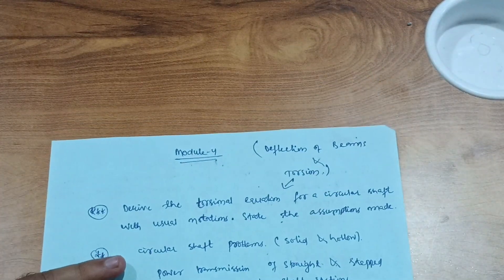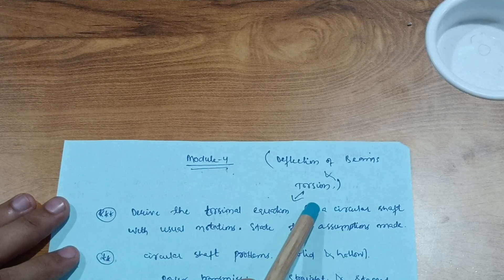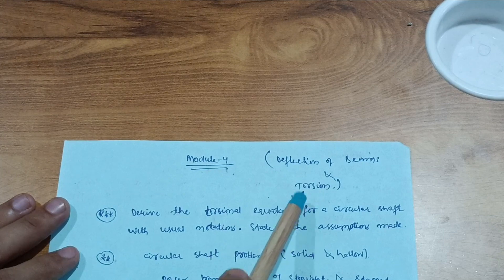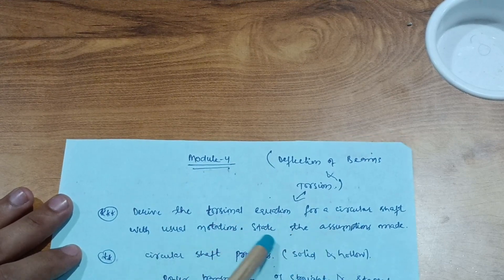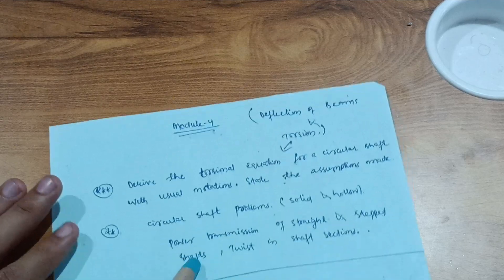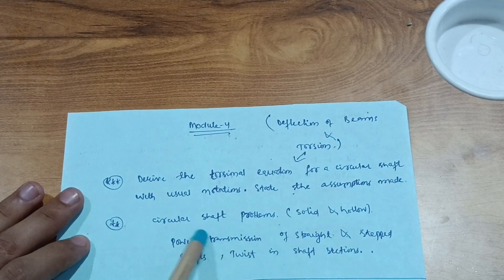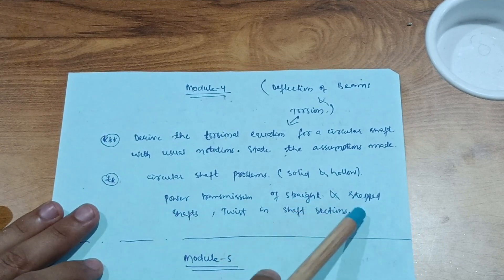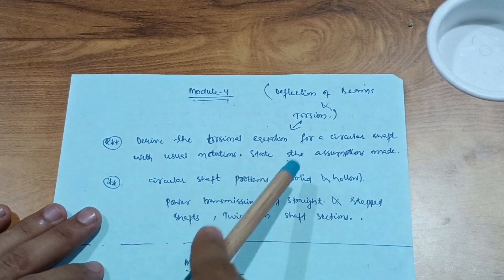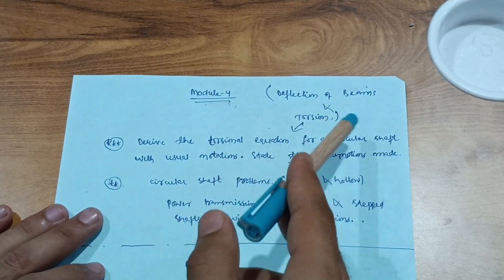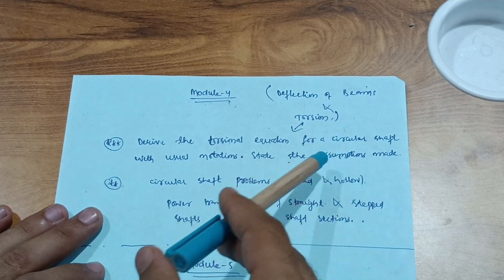Module 4 covers Deflection of Beams and Torsion — two parts. You should prioritize the Torsion chapter. One key derivation is: derive the torsional equation for a circular shaft with usual notations and state the assumptions made. Then focus on circular shaft problems involving solid and hollow shafts, power transmission of straight and stepped shafts, and twist in shaft sections. Torsion is a simpler part with less syllabus. The deflection of beams part is optional based on your preference.